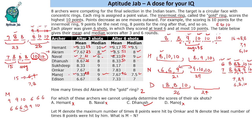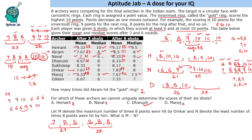The next question: let M denote the maximum number of times 8 points were hit by Omkar and N denote the least number of times 8 points were hit by him. What is M minus N? Omkar's first three total is 23 and the grand total is 47, so 24 in the last three shots. With a first-three median of 8, if we place 8 on all possible occasions and 7 in one shot, the median is still 8. This satisfies the maximum, so M equals 5.